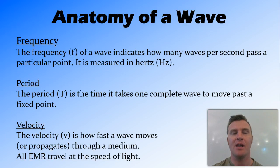And finally, velocity is how fast the wave moves or propagates through the medium. And now, all electromagnetic radiation moves at the speed of light. And the reason for this is that light is a form of electromagnetic radiation. So it all moves at the same speed, and we call that the speed of light.